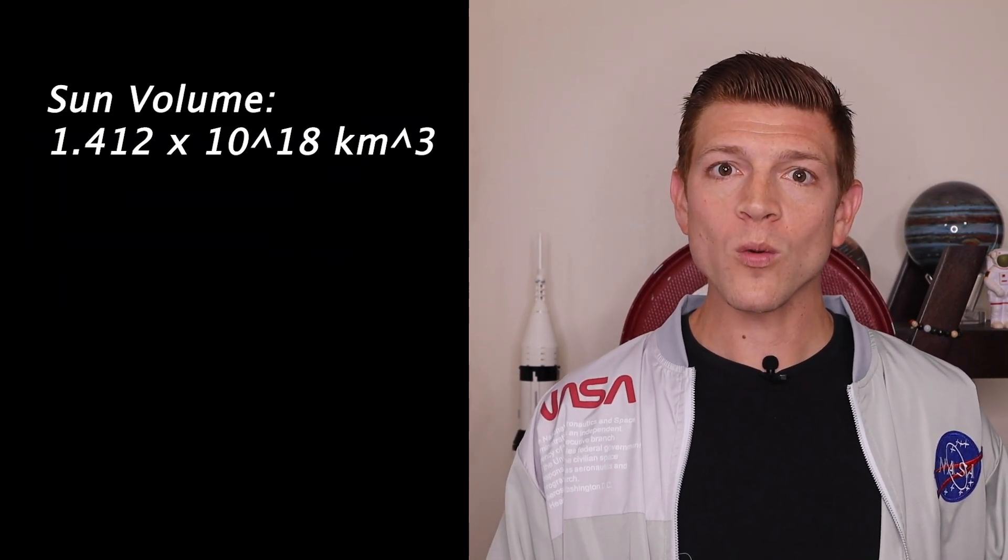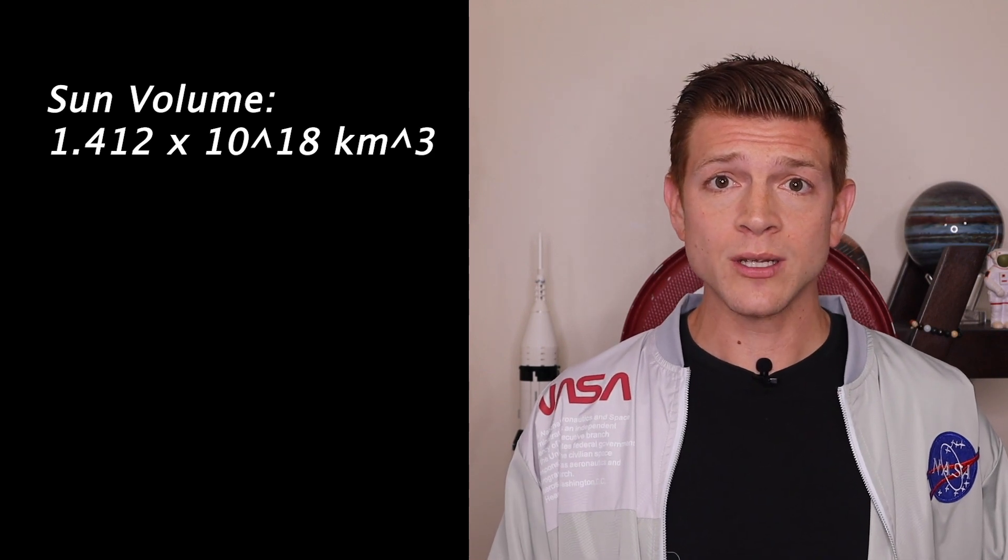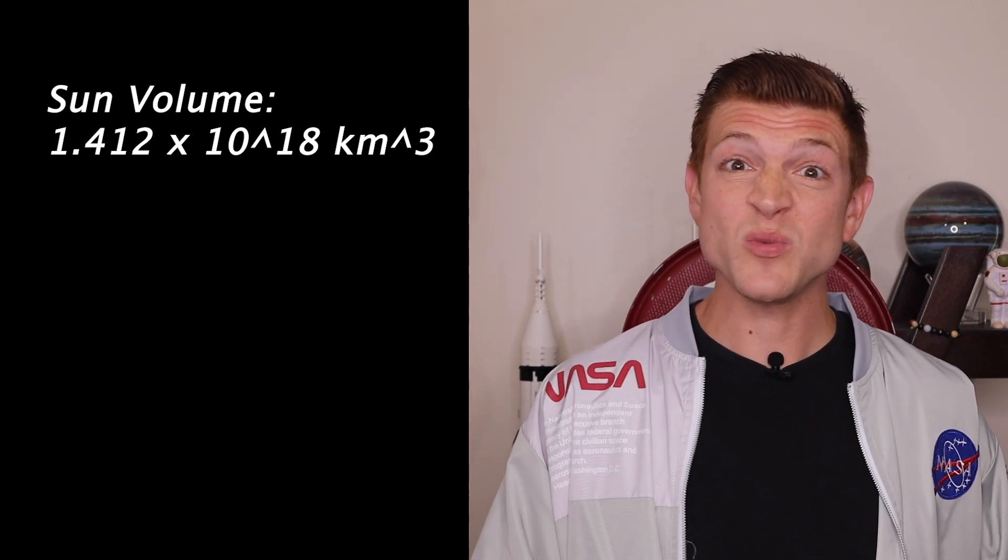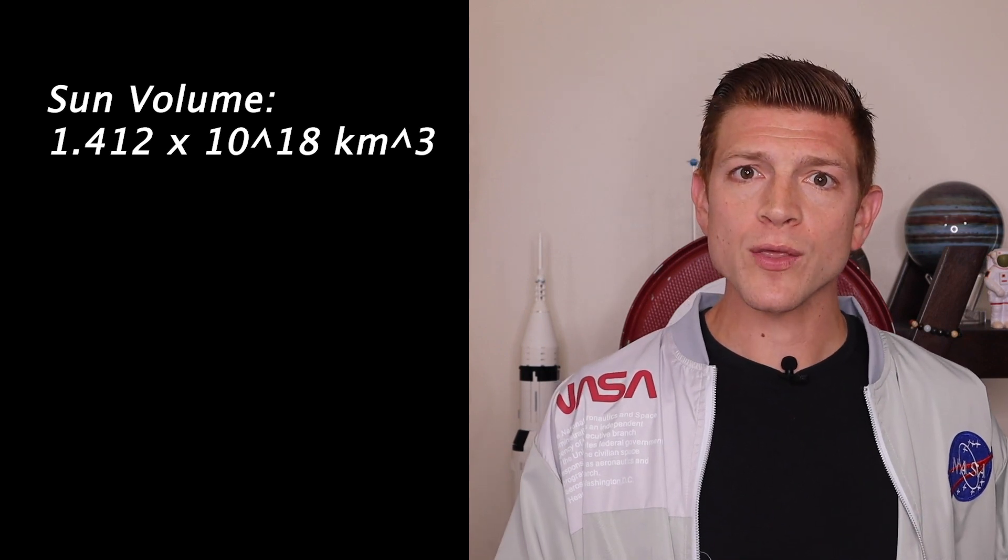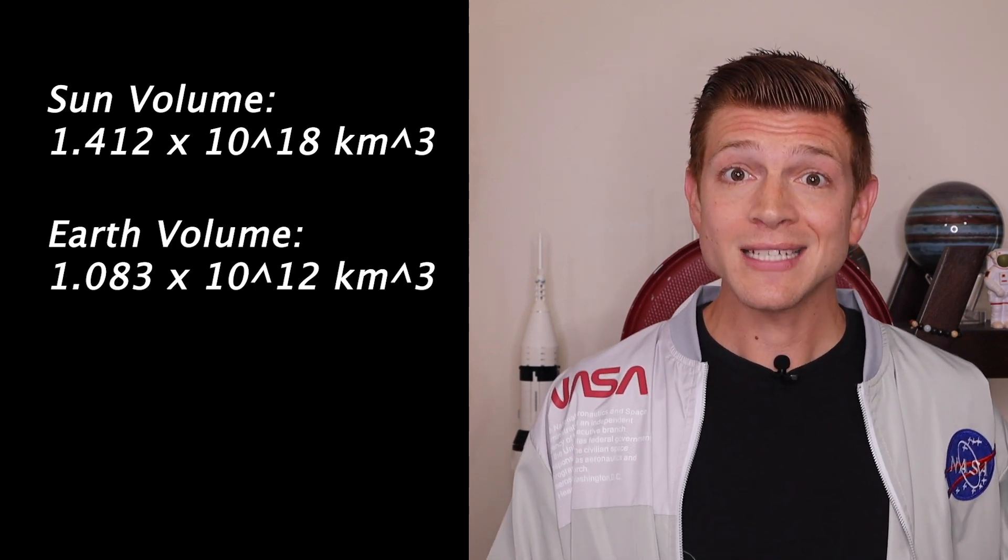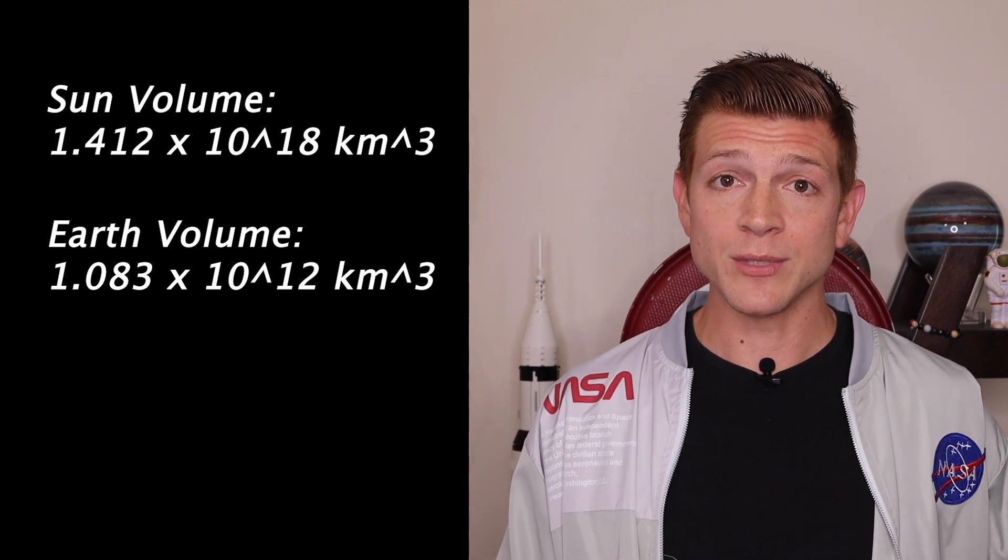So for the sun, on the inside of the sun, it's a huge number. It's 1.412 times 10 to the 18th kilometers cubed. Times 10 to the 18th means we add that many zeros after that number. So for Earth, we're at 1.083 times 10 to the 12th kilometers cubed.